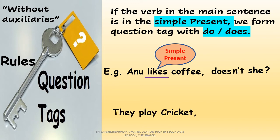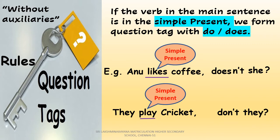Have a look at another example: 'They play cricket.' Here again, there is no auxiliary verb, so go for the main verb — 'play,' which is in simple present tense. We use 'do' or 'does.' Since the subject 'they' is in plural form, plural subjects take a plural verb, so we use 'do.' The sentence is positive, so we add 'n't,' followed by the subject pronoun 'they' and a question mark: 'don't they?'